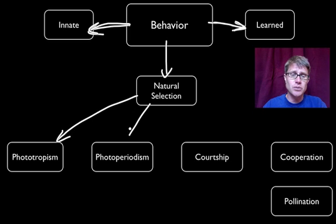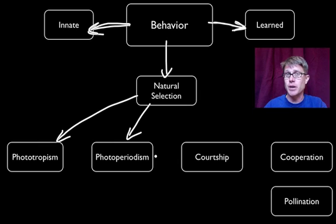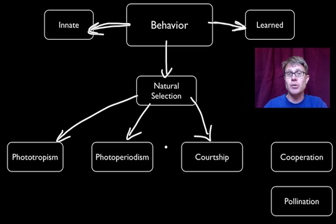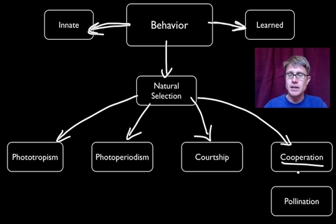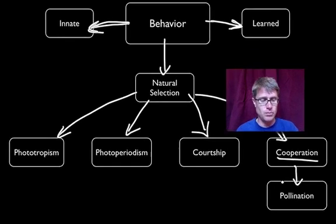The two plant behaviors we'll talk about are phototropism — growth towards or away from light — and photoperiodism — growth in response to the amount of light. We'll also talk about courtship in animals, with the bower bird as our example, and finally how organisms can cooperate, using insects and flowers coordinating through pollination as an example of symbiosis.